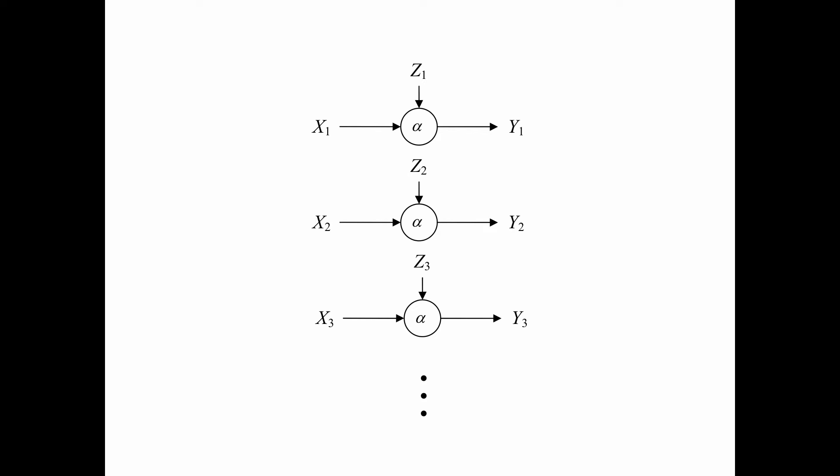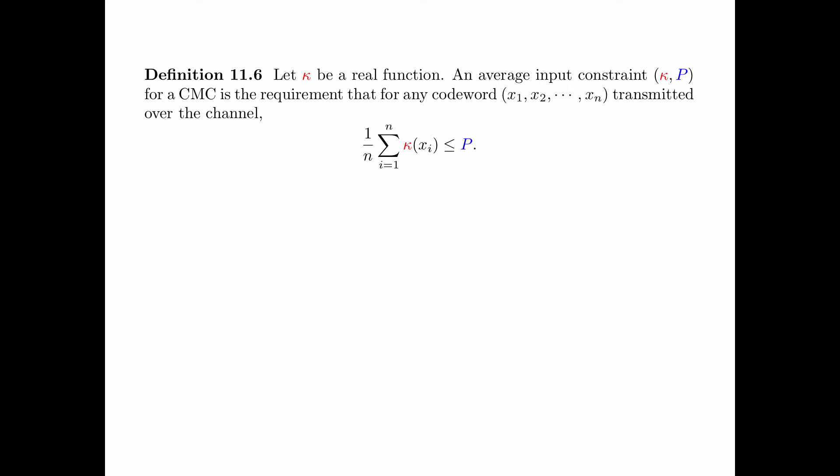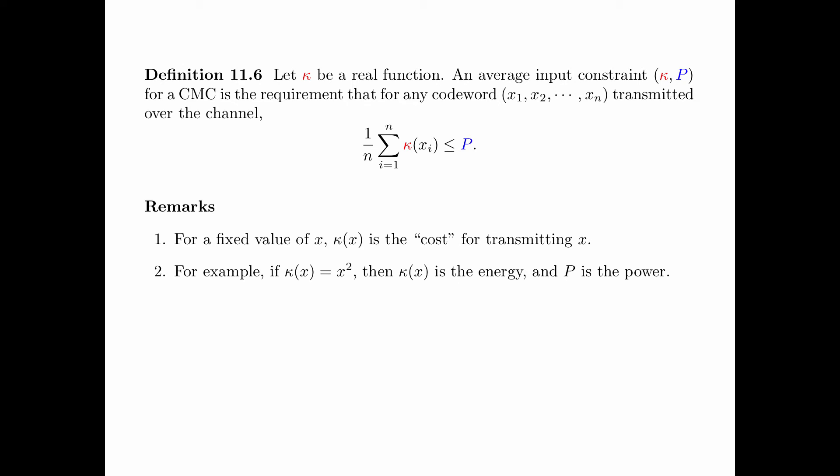Let kappa be a real function. An average input constraint for a CMC, given by (kappa, P) where P is a real number, is the requirement that for any codeword x_1, x_2, ..., x_n transmitted over the channel, (1/n) times the summation from i=1 to n of kappa(x_i) is less than or equal to P. For a fixed value of x, kappa(x) can be thought of as the cost for transmitting the symbol x. For example, if kappa(x) = x², then kappa(x) is the energy and P is the power. So the constraint in Definition 11.6 says that the average cost for transmitting a symbol is at most equal to P.